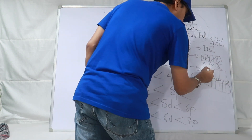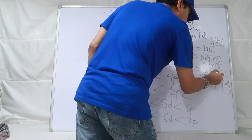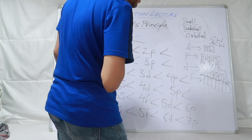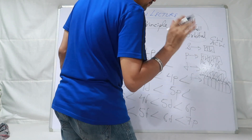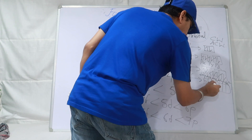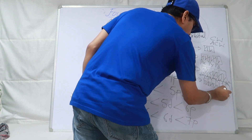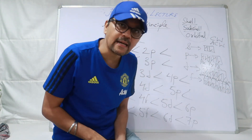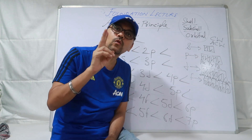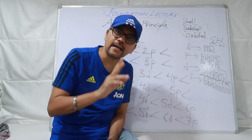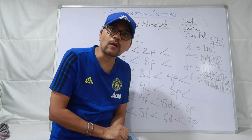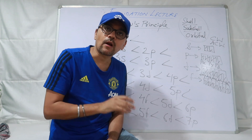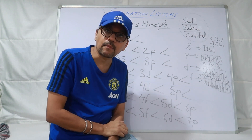D mein total paanch dabbe hain — paanch orbital hue hain. Ek orbital mein kitne electrons aa sakte hain? Do. To maximum kitne honge? 10. Ek dabbe mein do hi aa sakte hain. F mein? 14. Iska matlab: S orbital has one orientation, so do electrons ek dabbe mein accommodate kar sakta hai. Sabko malum hai atomic number is equal to number of electrons, aur aapko electronic configuration likhne ke liye kya chahiye? Number of electrons.